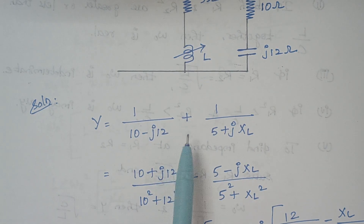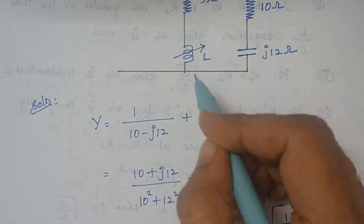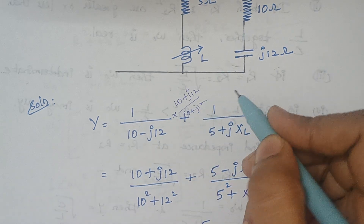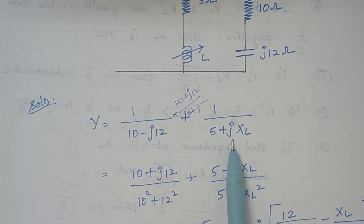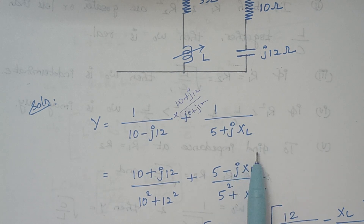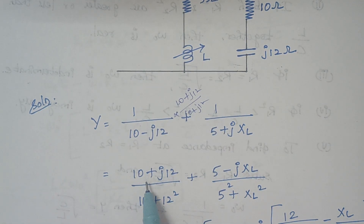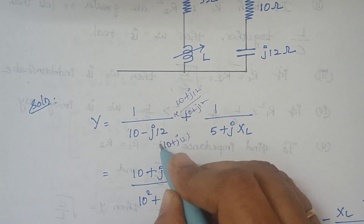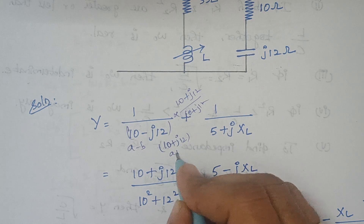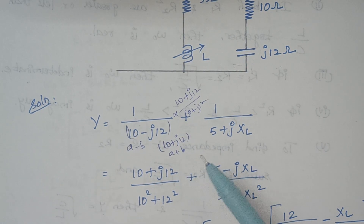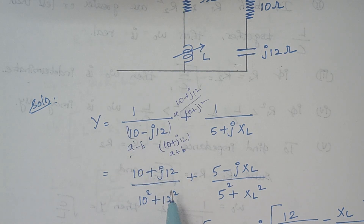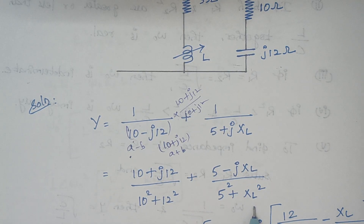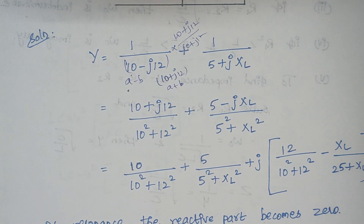The complex conjugate means multiplying and dividing each term by its opposite sign. So the first term gets multiplied and divided by 10 plus j12, and the second term gets multiplied and divided by 5 minus jXL. In the denominator, we have (10 minus j12)(10 plus j12), which is of the form (a minus b)(a plus b) = a squared minus b squared, giving 10 squared plus 12 squared. Similarly the other denominator gives 5 squared plus XL squared.